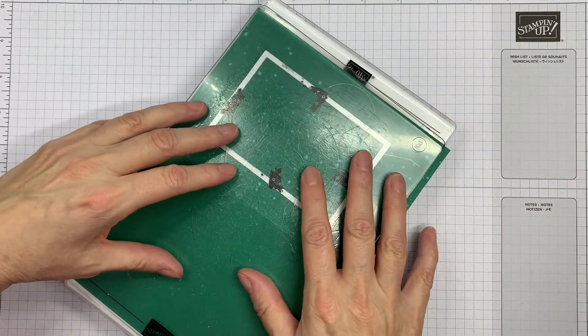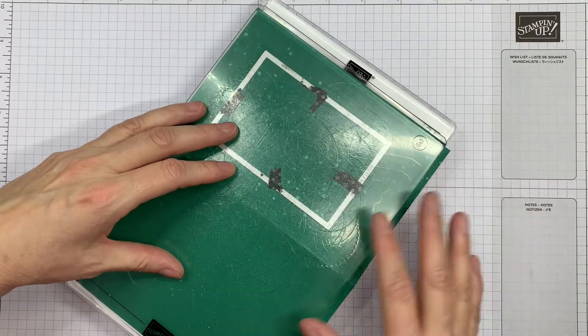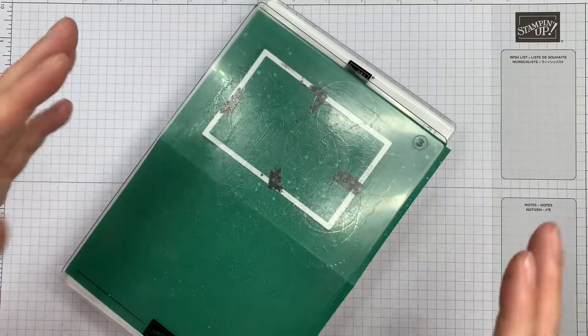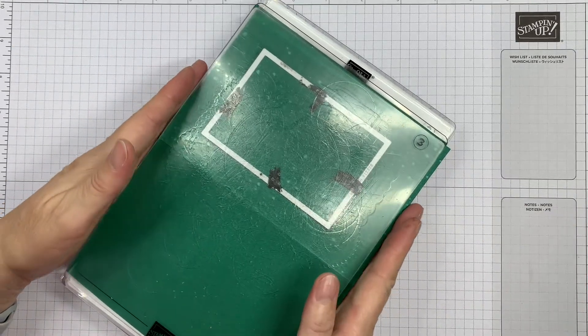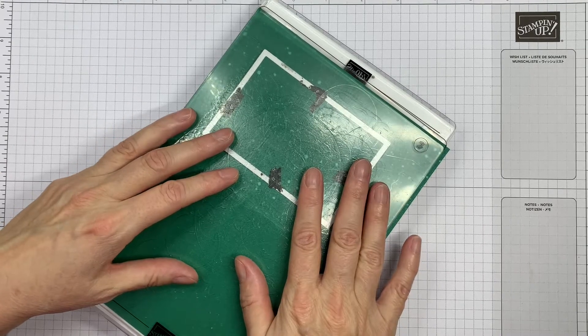I've already run this through my die cutting machine because it tends to make the table wobble when I do that. But I wanted to show you that this is only just possible with the large cutting and embossing machine.